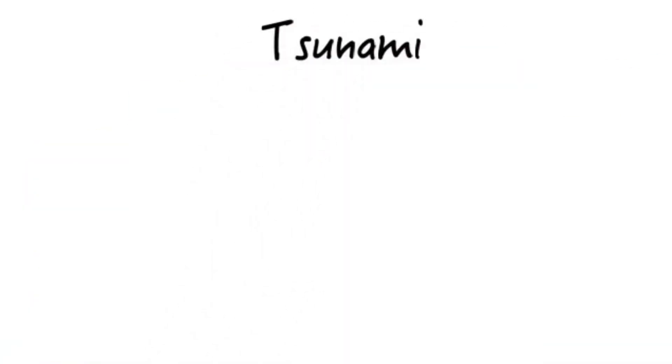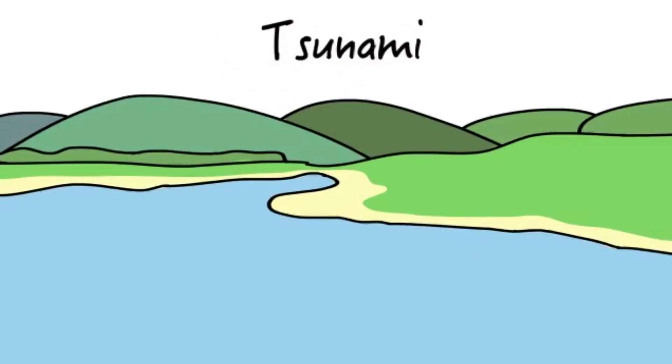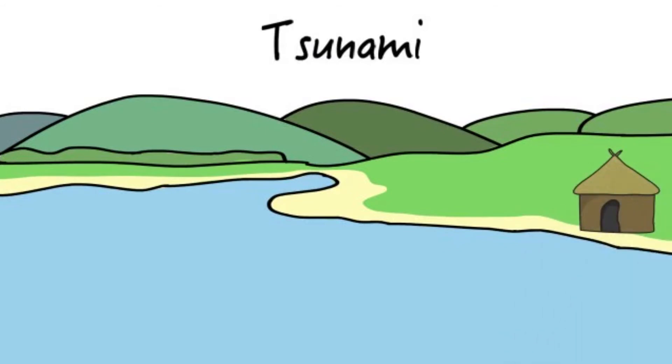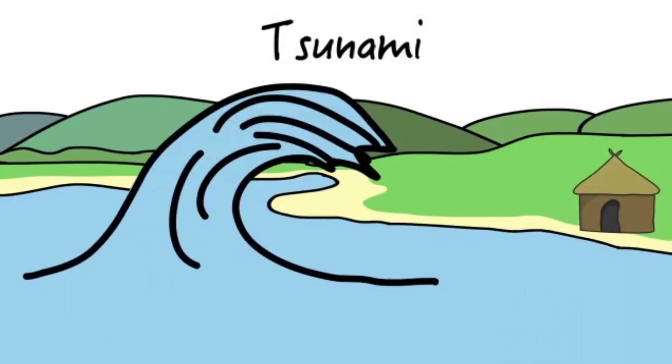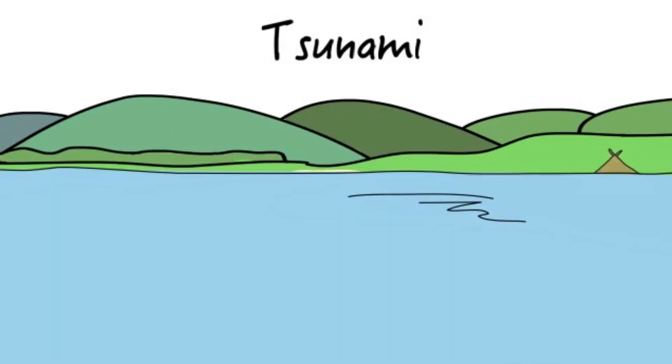Sometimes, after an earthquake, comes a tsunami, which is a giant wall of water that covers the coasts and its surroundings.